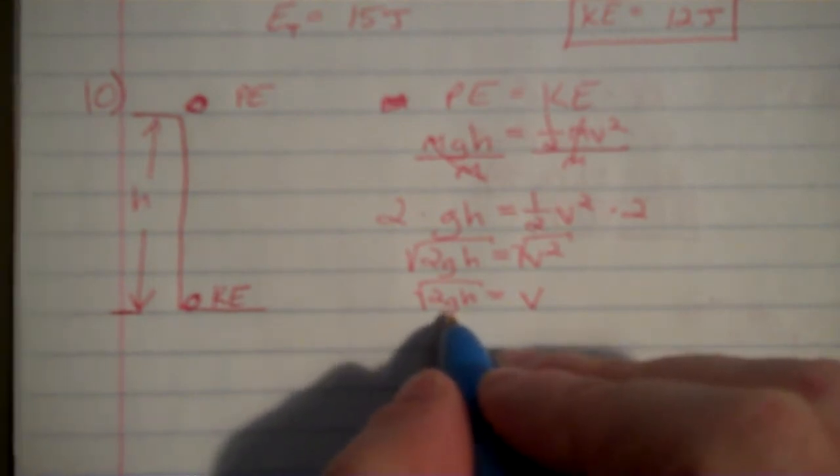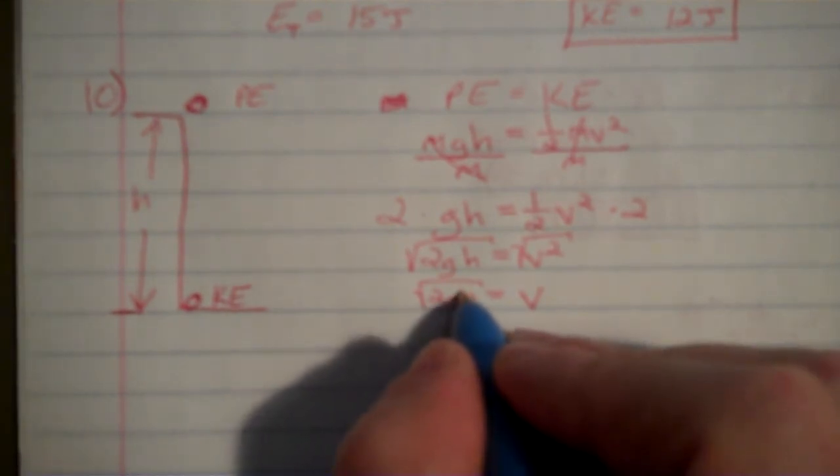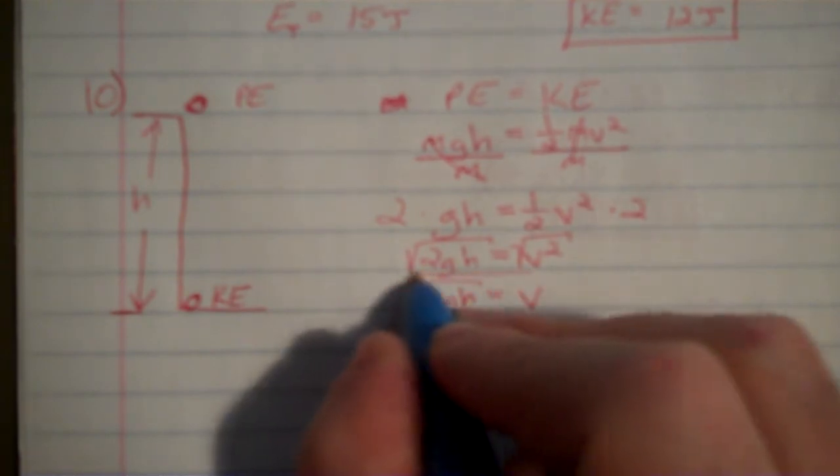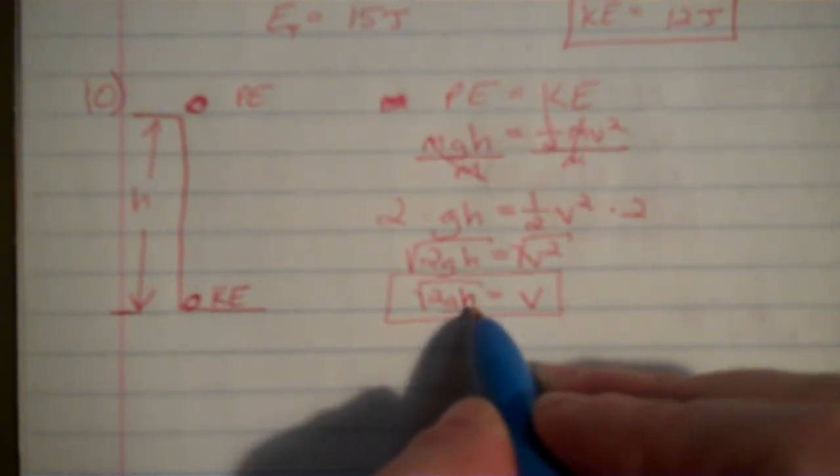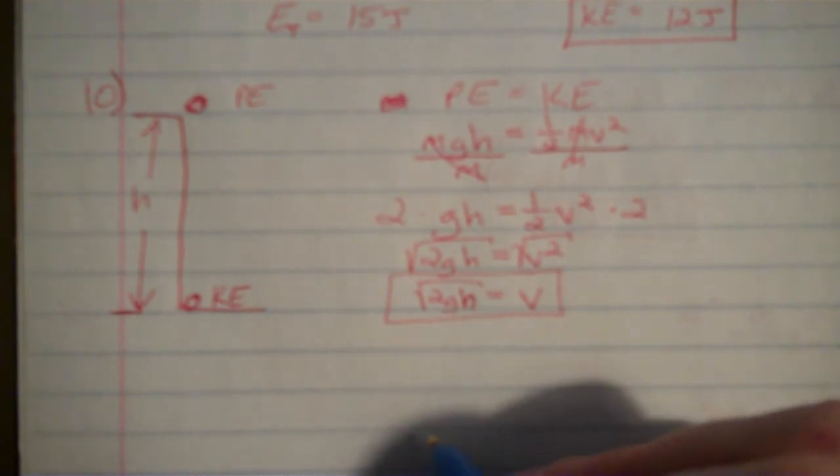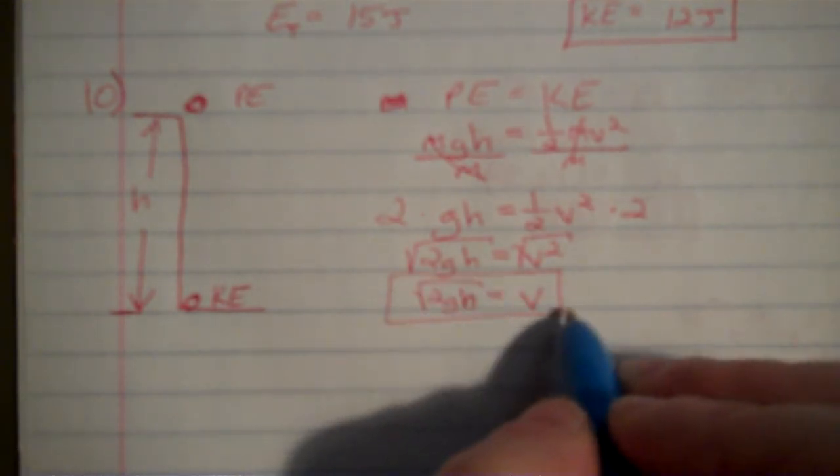I know g, the acceleration due to gravity. I don't know the height, but I'm just going to leave it as a variable. So now, if I know I have a situation where all of my potential is turning into kinetic, I can just plug in the height, it doesn't even matter what the mass is. I can plug in the height, and that will tell me what the velocity is going to be, square root of 2gh.